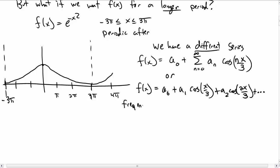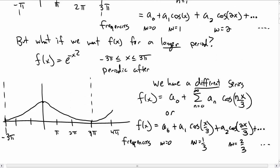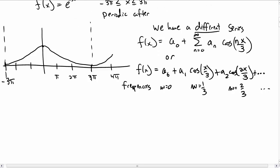So the frequencies that we're including here are ω equal to zero, ω equal to one-third, ω equal to two-thirds, ω equal to one, and so on. Comparing it to the one we had above, it looks like we're including more frequencies. That's indeed what's happening.